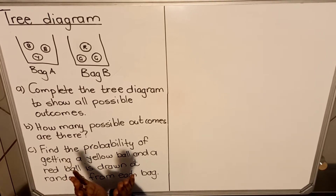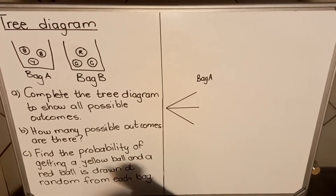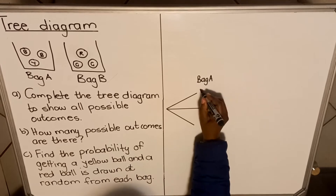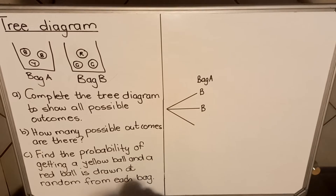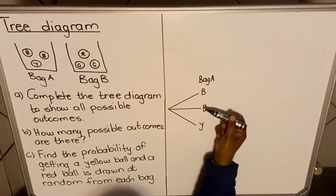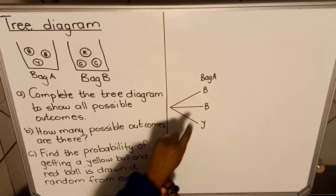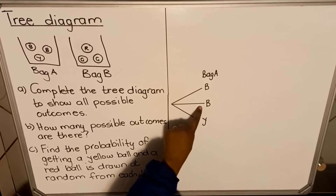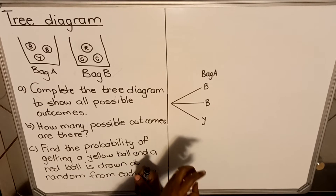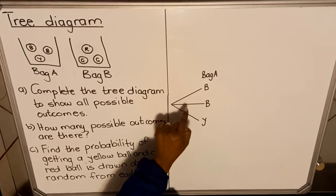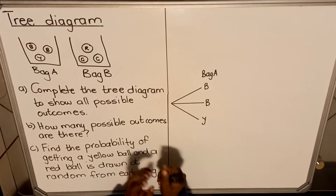Let me show you how you draw the tree diagram. For Bag A, you have three options. The first time you take out a ball it could be blue, or you could take out another blue one, or you could take out a yellow one. So all three options — you could take out a blue ball, another blue ball, or a yellow ball. You'll take out one ball at a time but your options are three, that's why you have three branches. After taking out either of these balls, you go to Bag B and take out a ball.